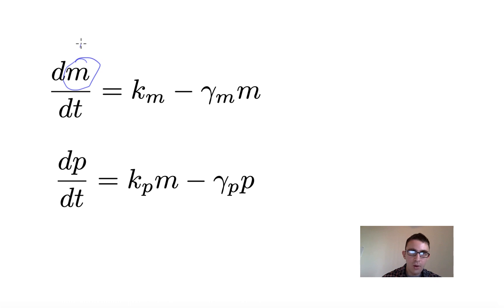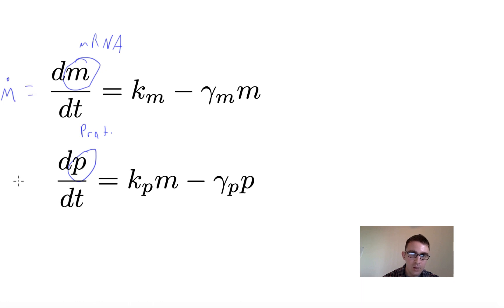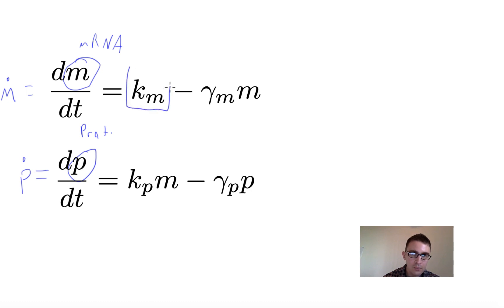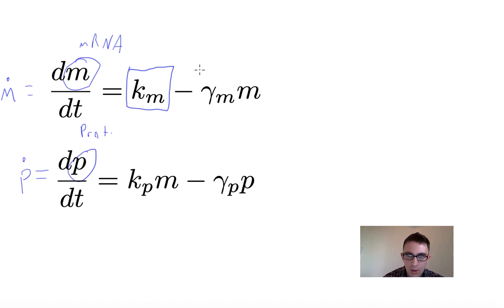The variable m is for mRNA, and the variable p is for protein. We're interested in the derivatives with respect to time. If you're working with engineers you may also see it written with a dot notation, which just means the derivative with respect to time. The first parameter, k sub m, is the production rate for the mRNAs — the rate at which they're being transcribed from the DNA.